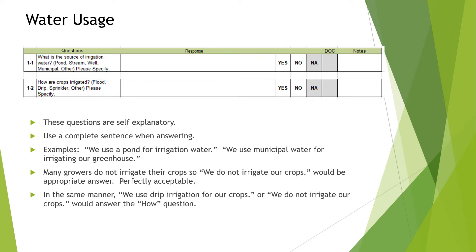Question 1: What is the source of irrigation water? Provide a response — circle yes and then give your detailed response in the box provided. For example: 'We use pond water for irrigation,' or 'We use municipal water for irrigating our greenhouses,' whatever is specific to your farm. Question 2: How are crops irrigated? Provide the answer yes and then explain: 'We do not irrigate our crops at this time,' or 'We use drip irrigation for our crops,' or if you use a combination of irrigation methods, you can incorporate both in the same response box.